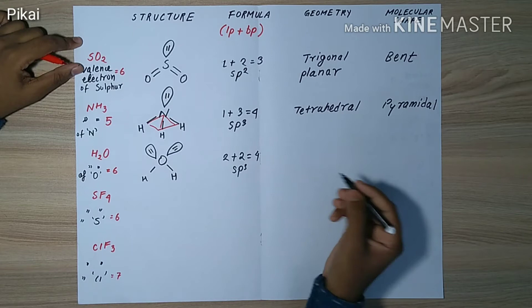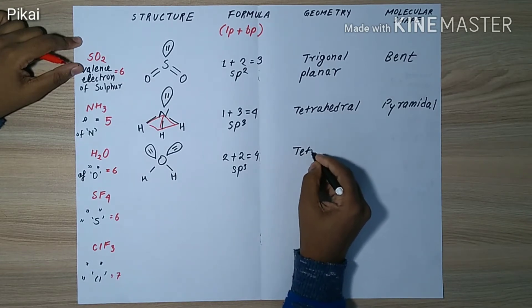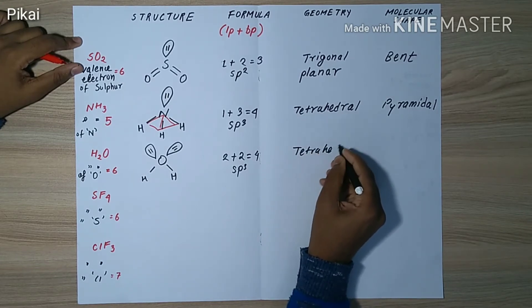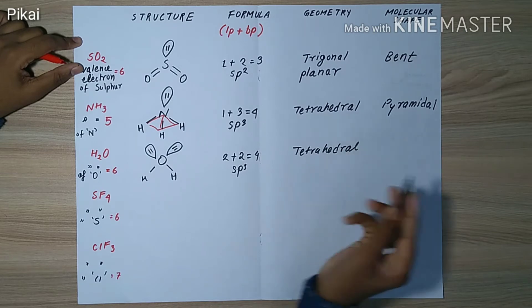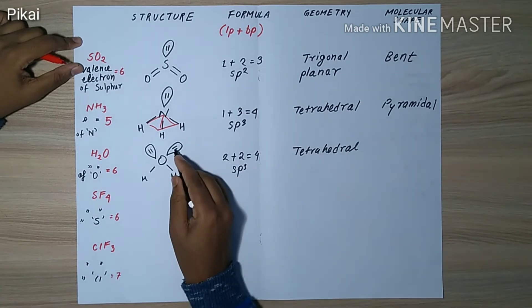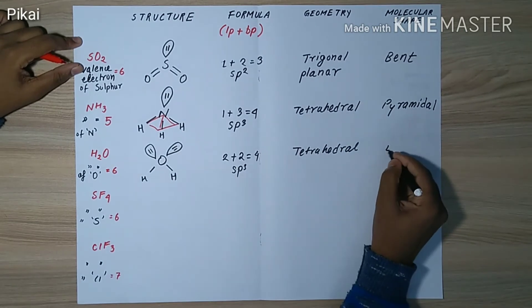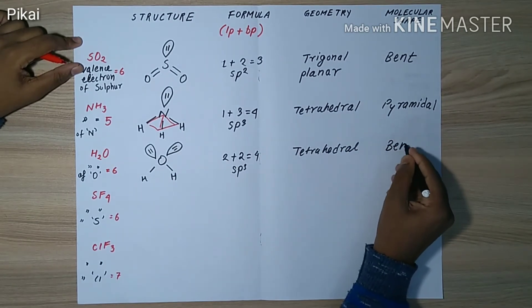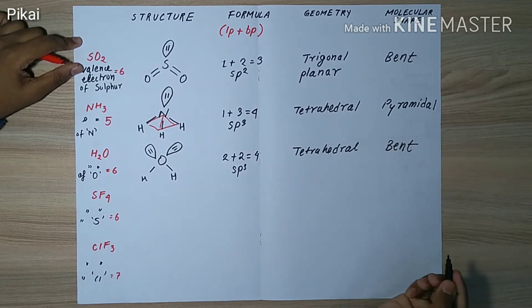This four denotes one s and three p orbitals, totalling sp3, which denotes tetrahedral geometry. If we don't consider the lone pairs, the remaining shape is bent, like sulfur dioxide.